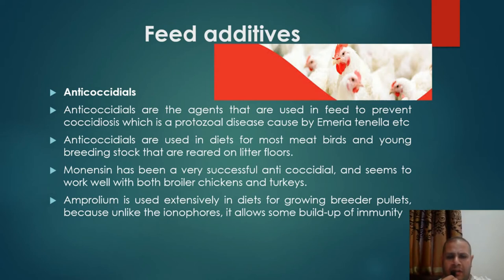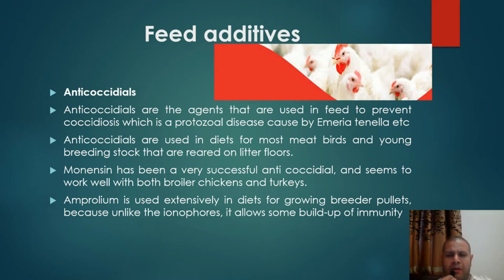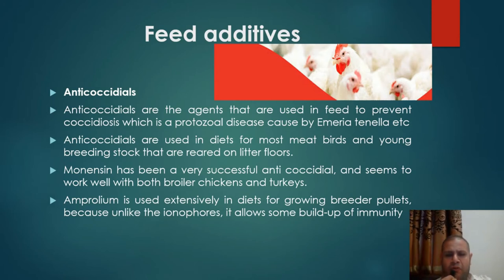Anticoccidials are agents used in feed to prevent coccidiosis, a protozoal disease caused by Eimeria tenella, etc. Anticoccidials are used in diets for most meat birds and young breeding stock reared on litter floors. Monensin has been a very successful anticoccidial and seems to work very well with both broiler chickens and turkeys. Amprolium is used extensively in diets for growing breeder pullets because, unlike the ionophores, it allows some buildup of immunity.